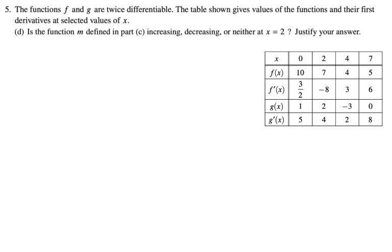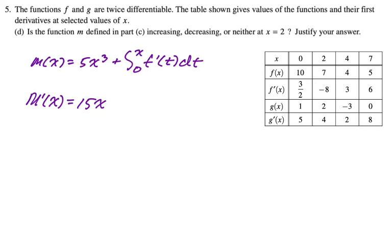Let's take a look at the next part. Is the function m defined in part c, increasing, decreasing, or neither at x = 2? So we're going to need the derivative of m from the previous part. Let's find m'(x). So just power rule the first part. That's going to give you 5 * 3x^2, so 15x^2 plus the derivative of an accumulation function. This is the second fundamental theorem of calculus. We're going to take the upper bound, which is x and sub it in. So that'll be f'(x) times the derivative of the upper bound, so times one. I think it's a good idea to always show that because what if the derivative of the upper bound is not one? You always want to remember what to do.